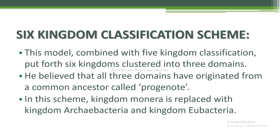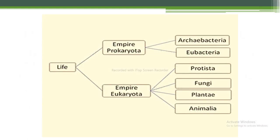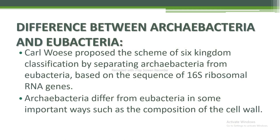He believed that all three domains originated from a common ancestor, also known as a progenote. In this scheme, the kingdom Monera is replaced with kingdom Archaebacteria and kingdom Eubacteria. Life is divided into two empires: the first empire is Prokaryota, divided into kingdoms Archaebacteria and Eubacteria; the next empire is Eukaryota, divided into four kingdoms: Protista, Fungi, Plantae, and Animalia.